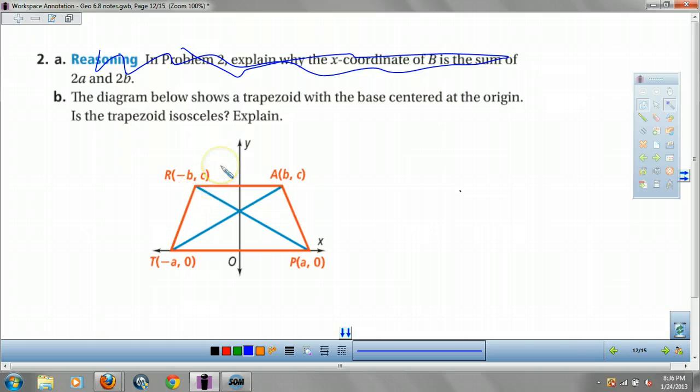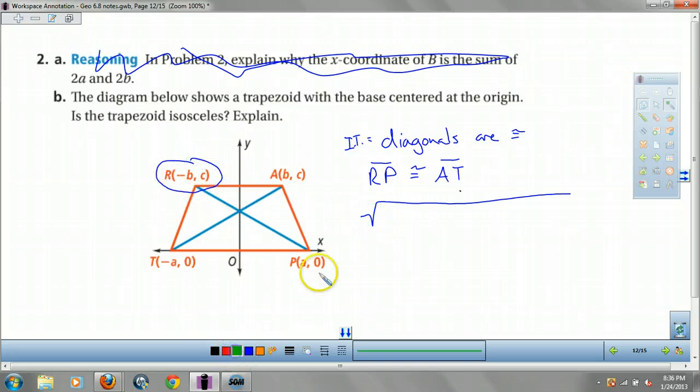Here they give us a trapezoid, they give us coordinates, they want to know is an isosceles a trapezoid. Can we tell just by looking at it? Well yeah we can. An isosceles a trapezoid means that your diagonals are congruent, right? So that means if RP is congruent to AT, we have an isosceles a trapezoid. So let's use our distance formula. Square root of x1 minus x2 squared plus y1 minus y2 squared. And we'll make this one blue, this one green, red and black, right?